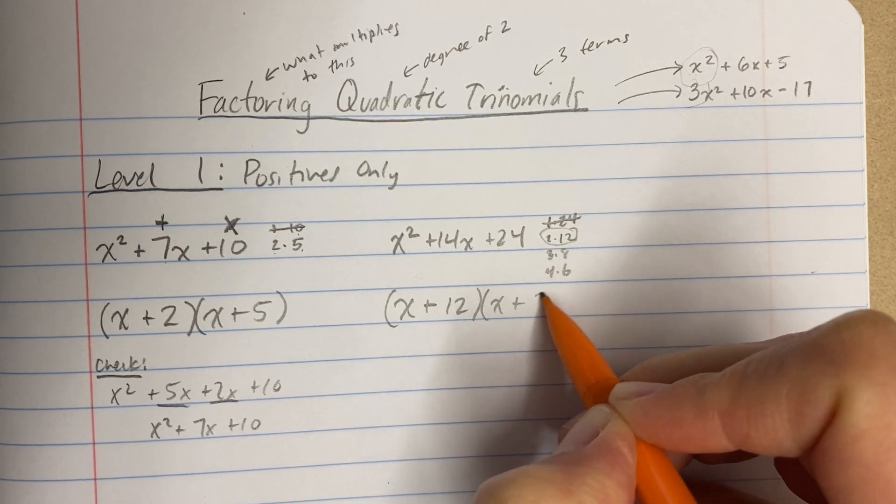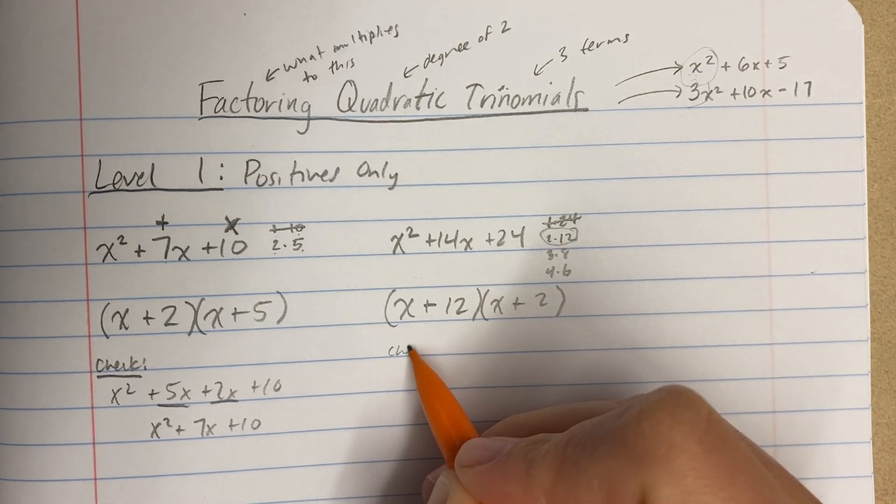I can put the 12 first. I can put the 2 first. It doesn't matter. When I multiply this out, if I want to check it, when I multiply this out,